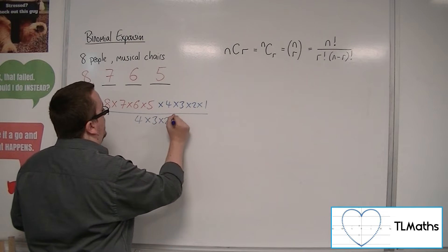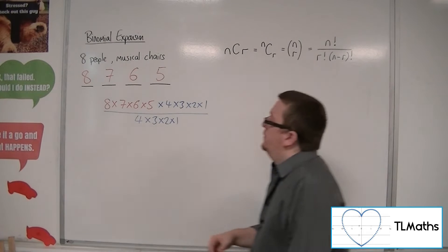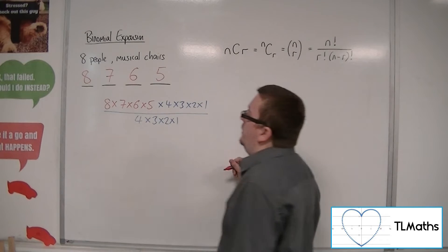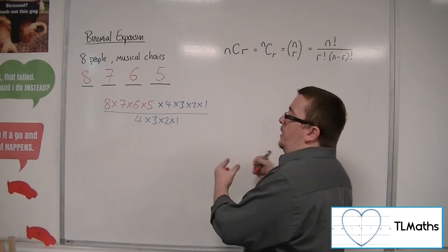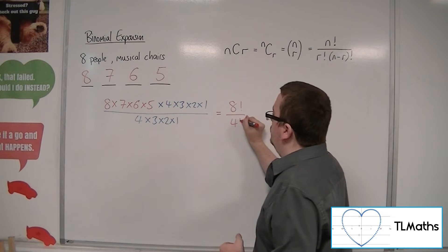Otherwise, it won't be the same value. So what I could say is that 8×7×6×5 is the same as eight factorial over four factorial.